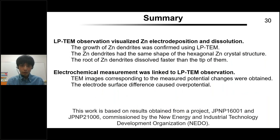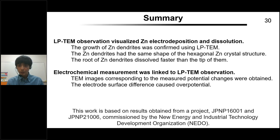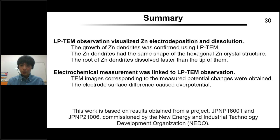In conclusion, we succeeded in visualizing zinc electrode deposition and dissolution using the liquid phase TEM system. In this observation, we obtained images of the initial stage of zinc dendrite growth, and we found that the zinc dendrite has the same crystal structure as hexagonal zinc. We also found that the roots of zinc dendrites dissolved faster than the tips. We tried linking the electrochemical measurements to liquid phase TEM images. As a result, we found that the electrode surface material may affect the electric potential changes and may cause the overpotential. Thank you so much for your kind attention.